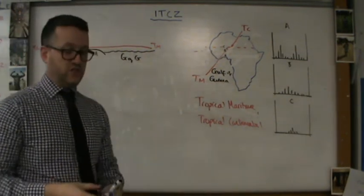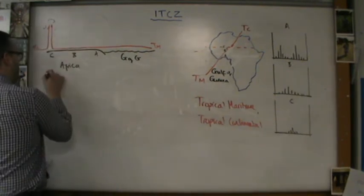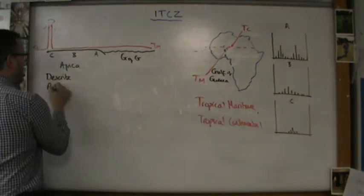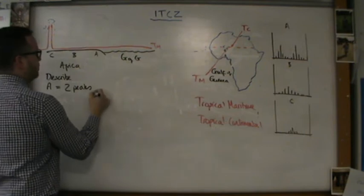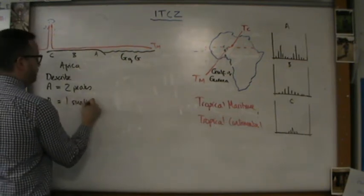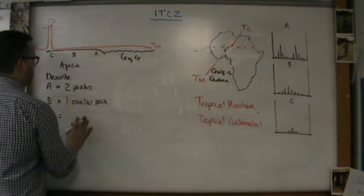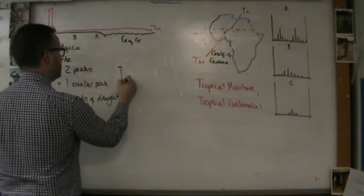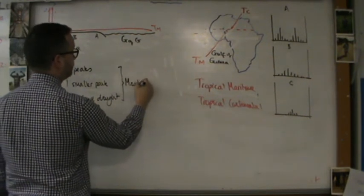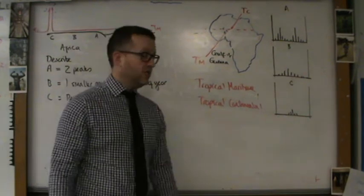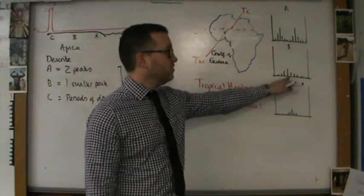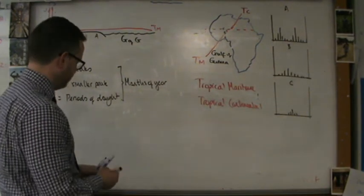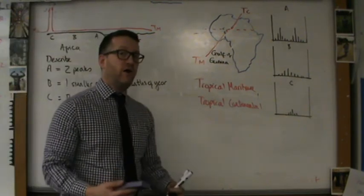So let's pause there and score our first marks. First of all, you might be asked to describe. If you're describing, you're describing these graphs and it's quite simple. A has two peaks. B has one smaller peak. And C has periods of drought. For all of these, quote the months of the year. Tell me when the periods of drought are, tell me when the peak of rainfall is, and tell me when the two peaks of rainfall are. And those would be adequate descriptions. In a question of this nature, you could get up to half marks for description of the graphs.